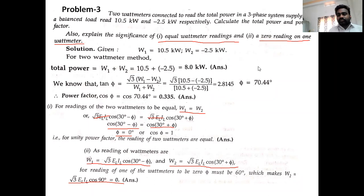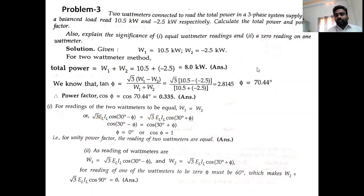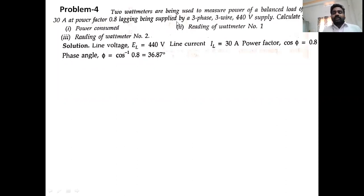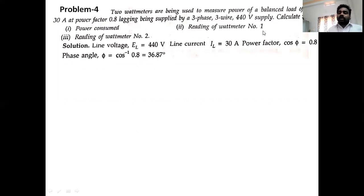Problem 3 is clear. The two-wattmeter method analysis covered: actual total power and power factor calculation, the condition when both readings are equal (unity power factor), and the condition when one reading is zero (φ = 60°). Post any queries in the chat box. Moving to Problem 4.